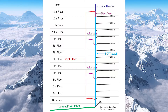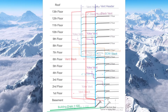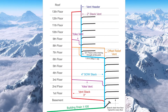From that last Yolk Vent, if I continue to count stories down, I only have three more stories before I get to the Vent Stack, so I do not need another Yolk Vent there — I already have the Vent Stack. Part B of that clause talks about an offset or a double offset, but we're not going to cover that in this video series; we'll cover it in Offset Relief Vents.